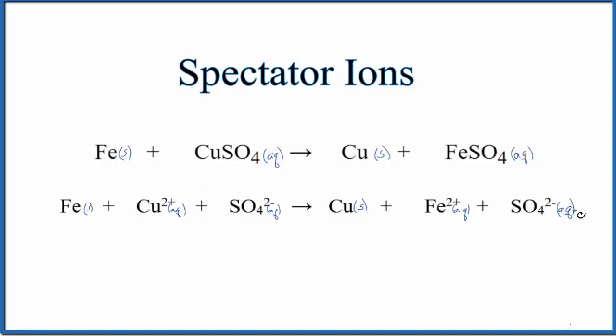So pause and identify the spectator ions here in the complete ionic equation. This is our original equation. It's already balanced. Here's our complete ionic. What are the spectator ions? As we look at it we have Fe here and Fe2+. Those are different. We have a solid, aqueous, those aren't spectator ions. Same for the copper. These are different. The only thing that's the same, that's the sulfate ion. This is the spectator ion. If we cross these out, what's left would be a net ionic equation.